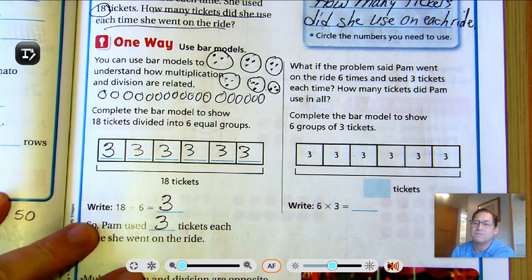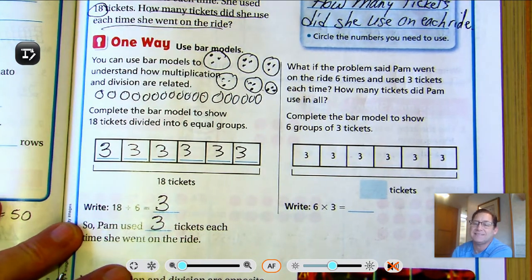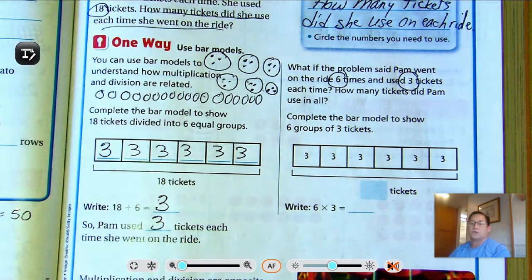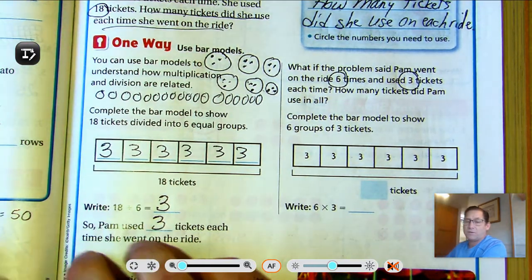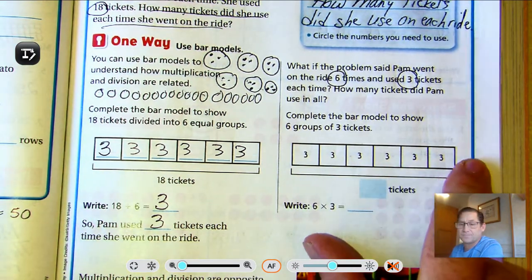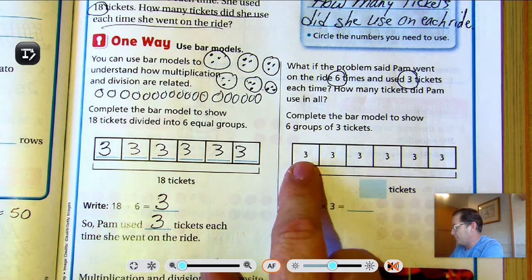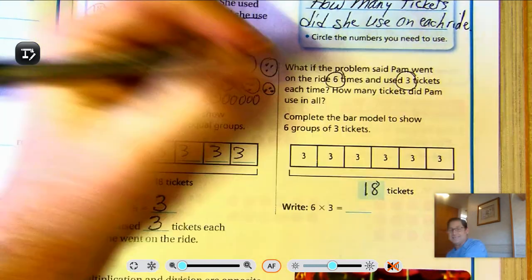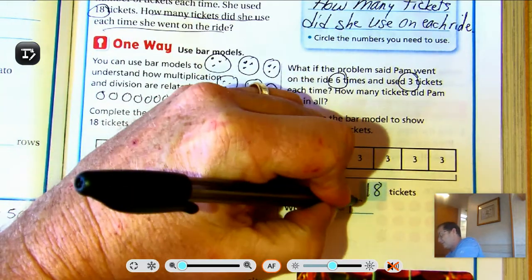So 18 divided by six is three. So she used three tickets each time she went on a ride. But what if the problem said Pam went on the ride six times and used three tickets each time?